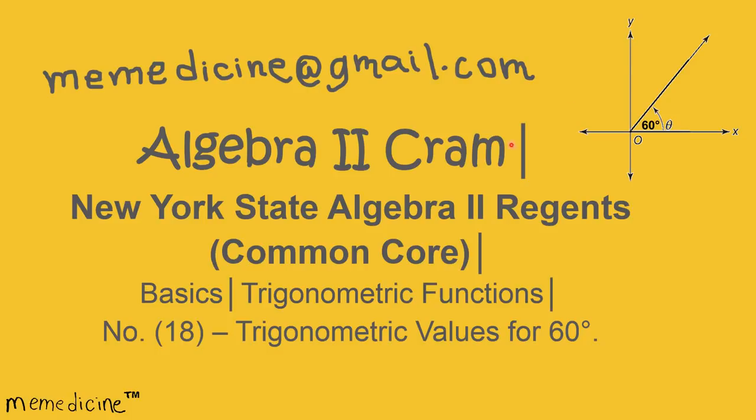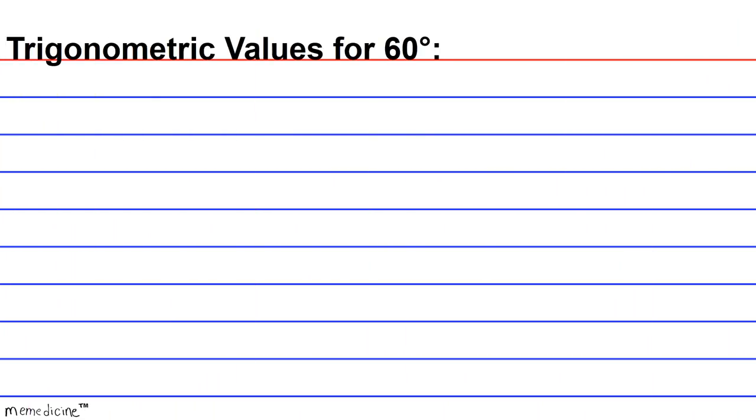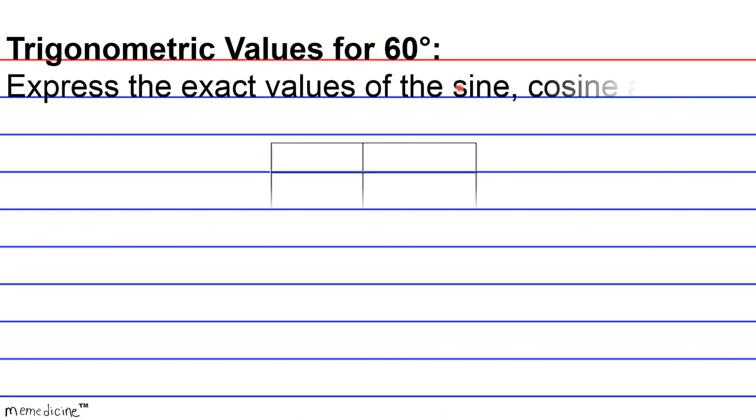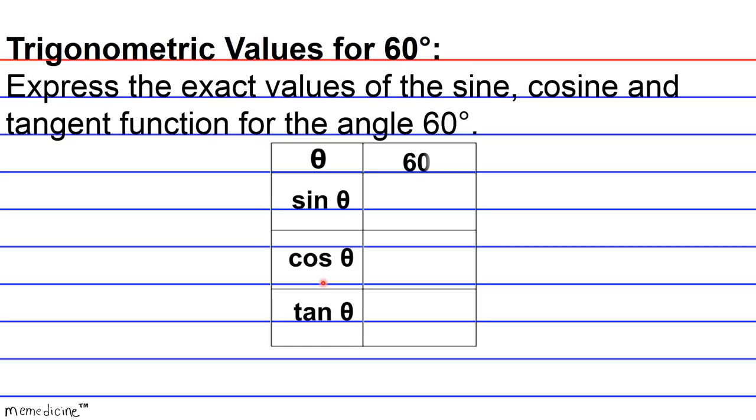So let's delve into the concept of trigonometric values for the acute angle 60 degrees. Express the exact values of the sine, cosine and tangent function for the angle 60 degrees. And notice instead of using the variable X, I use the lowercase variable theta.